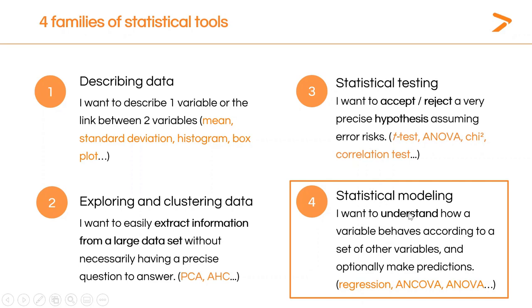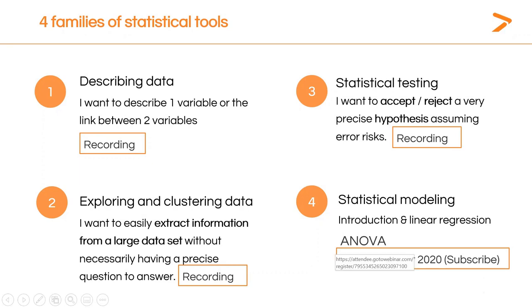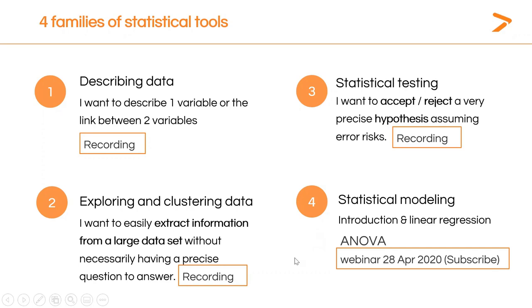And lastly, statistical modeling, which we'll be talking about today, helps understanding how a specific variable behaves according to a set of other variables, and optionally helps making predictions. So there are two purposes: explanation and prediction. Among statistical modeling tools, we will find regression, ANCOVA, and ANOVA. The difference between regression and ANOVA is that regression implies explaining one quantitative variable by a set of quantitative variables, while ANOVA implies modeling one quantitative variable by a set of qualitative variables.